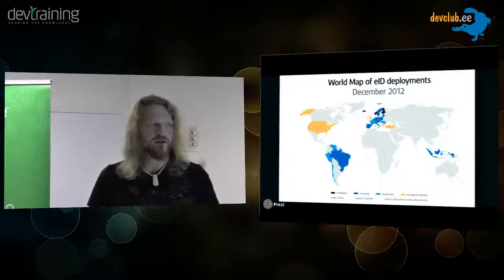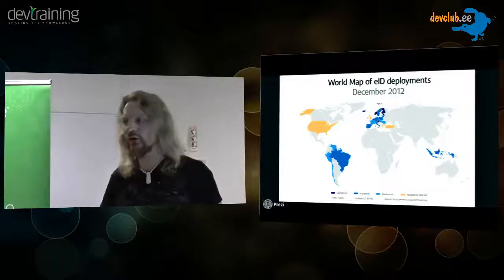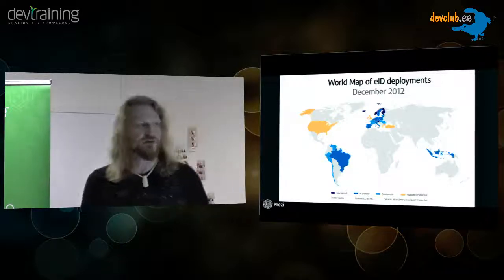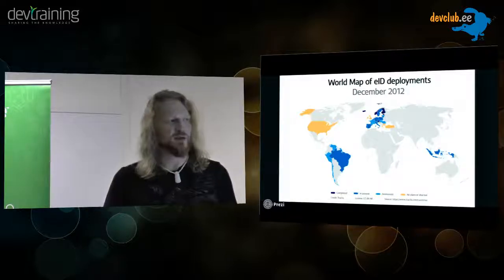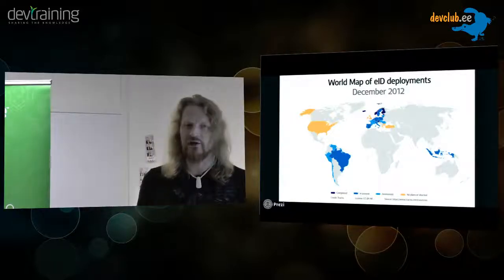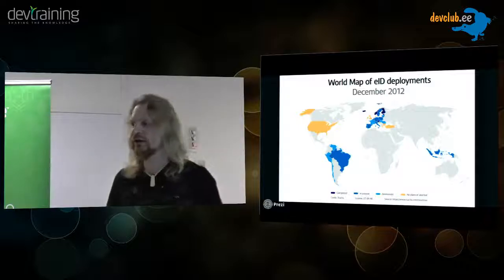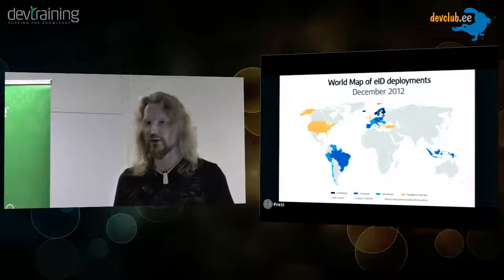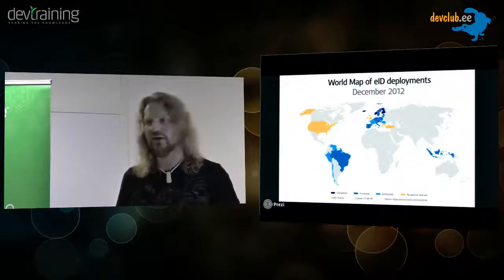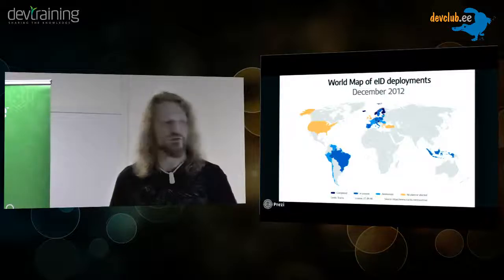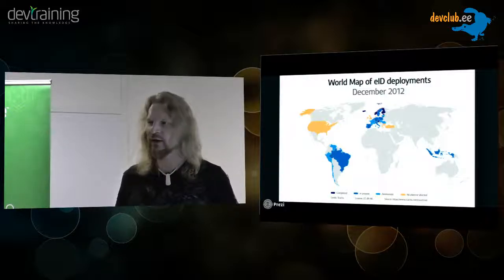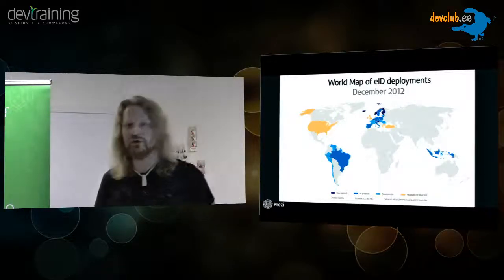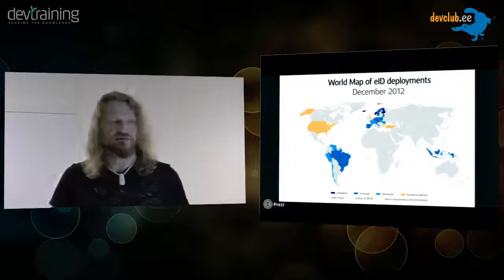Looking at the world map, not much has changed — there are very few countries that have actually deployed electronic ID with digital signatures. Most countries in the European Union are now trying and looking at Estonia. One very notable large country is Germany — they issued a new national ID card, an RFID card which is also an interesting innovation, but they use it only for authentication, not for digital signing. They say maybe someday they will start signing with it. But unfortunately most countries are still very far behind.